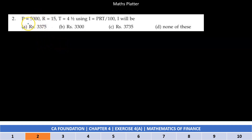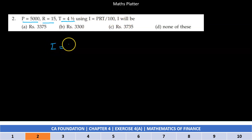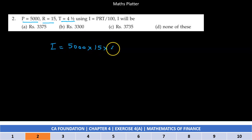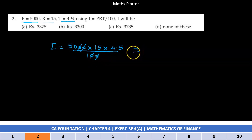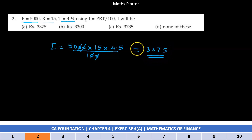If P is 5000, R is 15, and T is 4.5, using I equal to PRT by 100. Substitute karna hai: I is equal to 5000 into 15 into 4.5, divided by 100. The two zeros cancel out, so we have 50 into 15 into 4.5, which is 3,375. The correct answer is Option A.